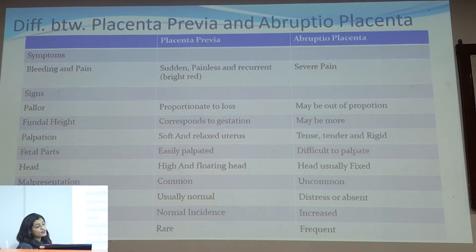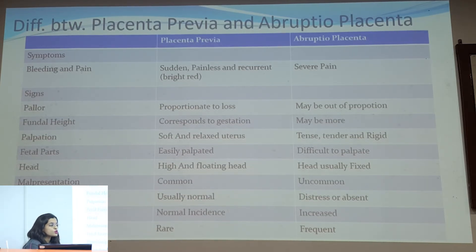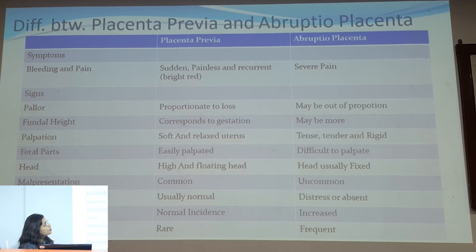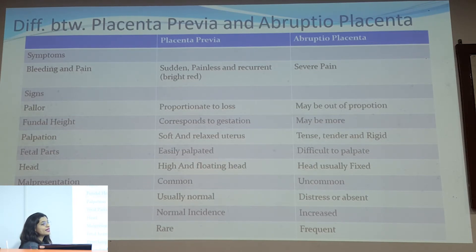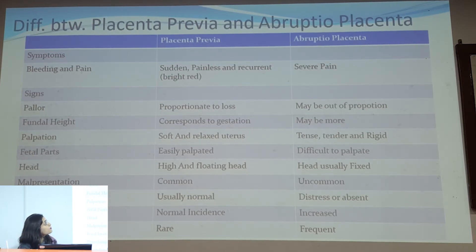To differentiate placenta previa from abruptio placentae: if a 26-year-old patient with a history of previous uterine surgery presents with painless pervaginal bleeding, think placenta previa. However, if the same patient gives a history of hypertension with tense and tender abdomen, think abruptio placentae. The key keywords are: placenta previa — painless bleeding; abruptio placentae — tense, tender abdomen with hypertension.